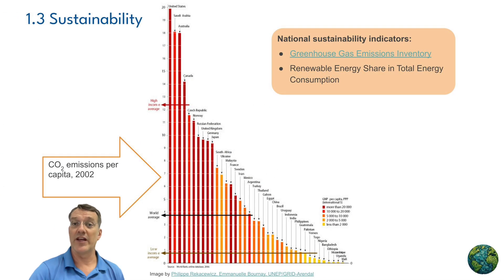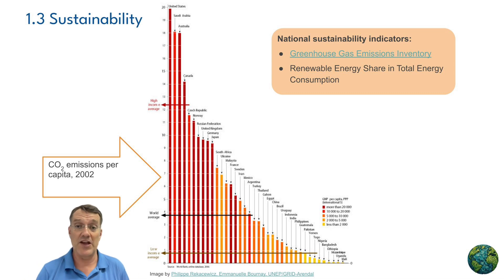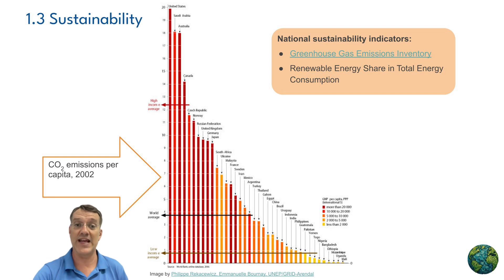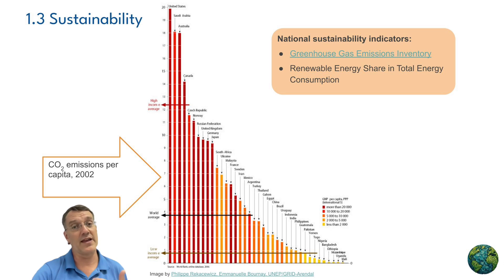Going up in scale, we end up at the national level. At the national level, we might have something like the greenhouse gas emissions inventory, which is a measure of the total amount of greenhouse gases emitted by a nation. That accounts for industry and for individual actions.